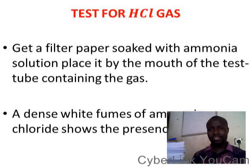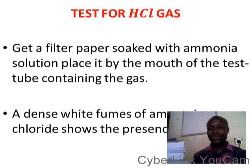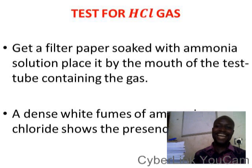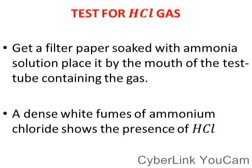Let's look at the test for hydrogen chloride gas. How will you test for hydrogen chloride gas? Get a filter paper, soak it with ammonia solution, and place it in the mouth of the test tube containing the unknown gas. You will see a dense white fume of ammonium chloride, which shows the presence of hydrogen chloride gas.